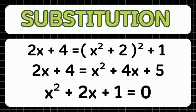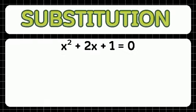For the third step, we will arrange the equation to bring all terms to one side. So the equation will be x squared plus 2x plus 1 equals 0.